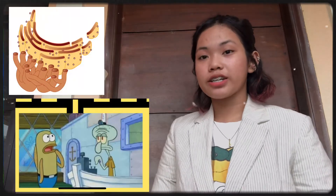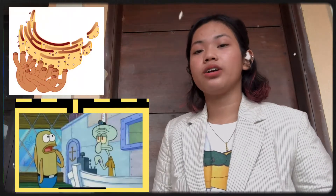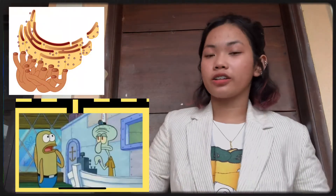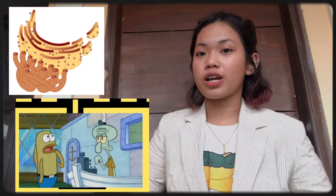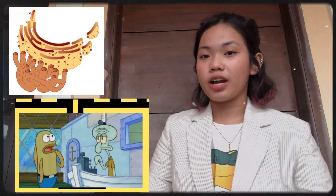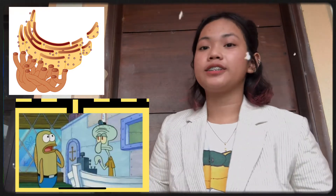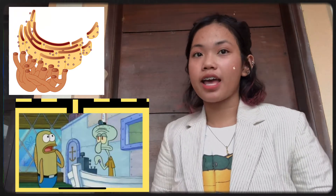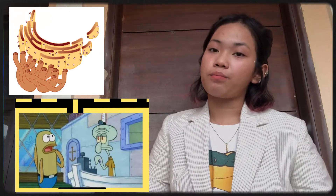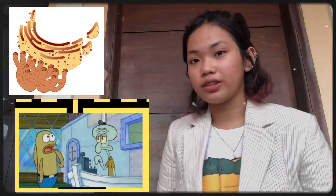Eighth is the Golgi apparatus. The Golgi apparatus in the Bikini Bottom is Squidward because he is the one who takes the order and packages the food for the customers of the Krusty Krab. The Golgi apparatus is a cell organelle that helps process and package proteins and lipid molecules.